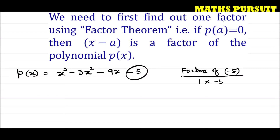The factors of minus 5 are: 1 times minus 5, and minus 1 times plus 5. So we are getting two sets of factors: plus or minus 1 and plus or minus 5. We need to test at which value of x we get p(a) equal to 0.